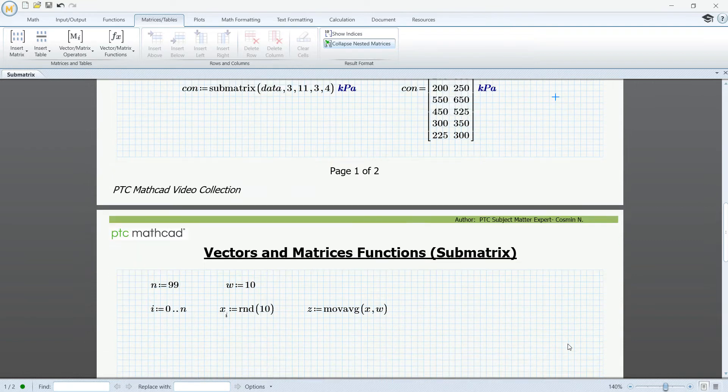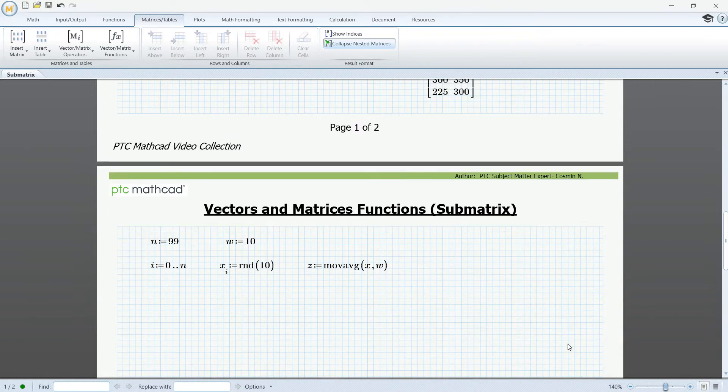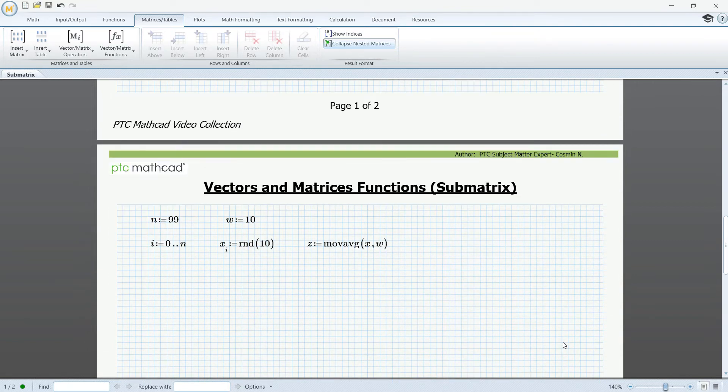In the next example I will use the submatrix function to replicate the behavior of a moving average function. For this we are using a set of 100 random points and the window or subset of 10 values. So we generate the vector of values using a range variable and the random function, then we use the moving average function for the x vector and the w window.